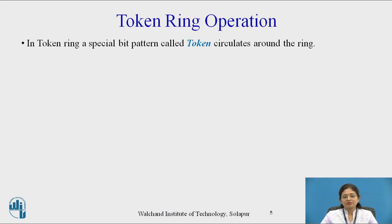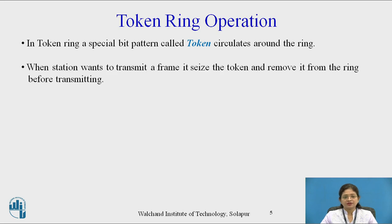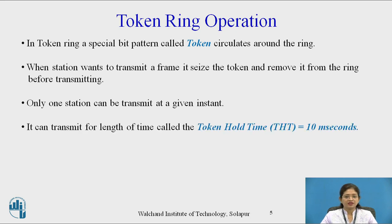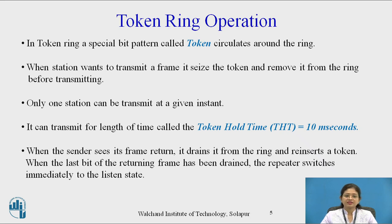In token ring, a special bit pattern called the token circulates around the ring. When a station wants to transmit a frame, it seizes the token and removes it from the ring before transmitting. Only one station can transmit at a given instance. It can transmit for a length of time called the token hold time (THT), which is 10 milliseconds. When the sender notices its frame return, it drains it from the ring and reinserts a token for the next station. When the last bit of the returning frame has been drained, the repeater switches immediately to listen mode.